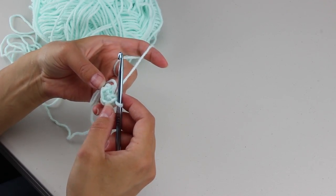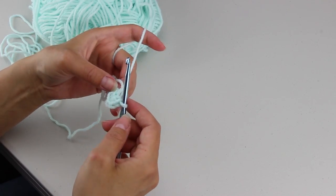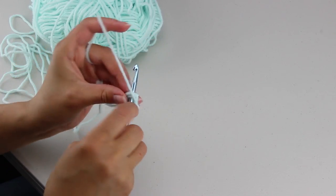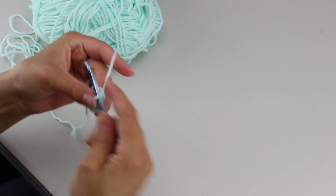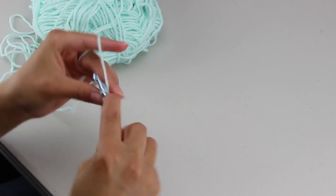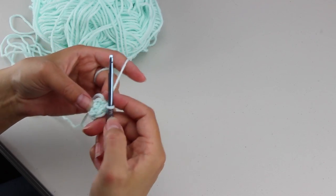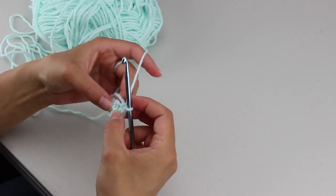So I'm going to go back into my first single crochet and I'm going to do 2 single crochets. And then I'm going to continue to do 2 single crochets in each stitch around so I should have 10 stitches by the time I finish this row.